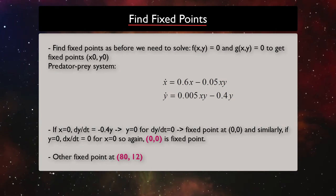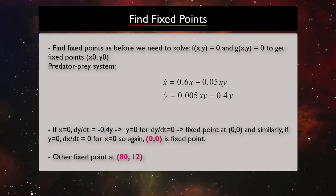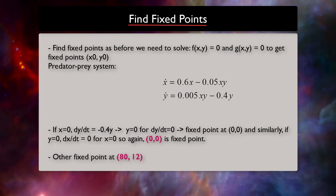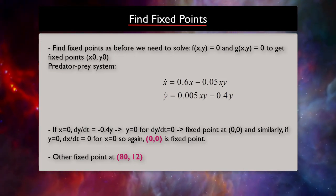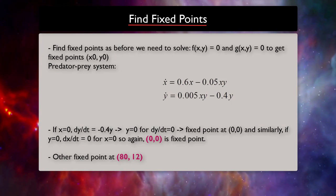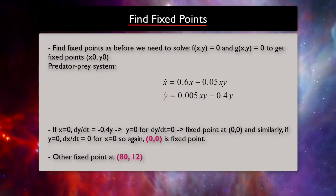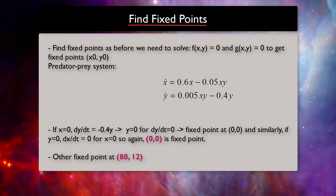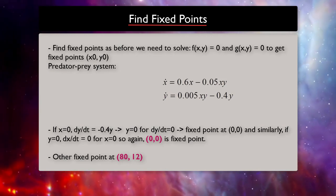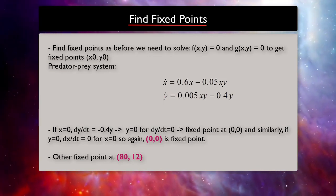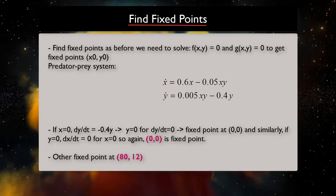If we do this and try to find a fixed point for an example of a predator-prey system and put all derivatives equal to 0, then we can find two fixed points. The first one is (0,0) and the second one is x = 80 and y = 12.